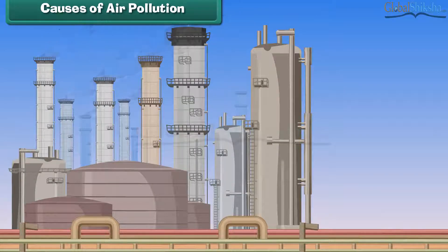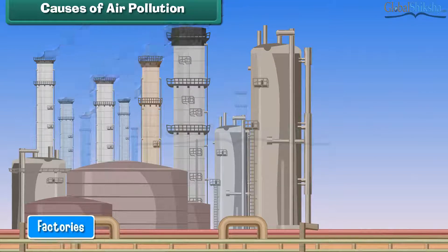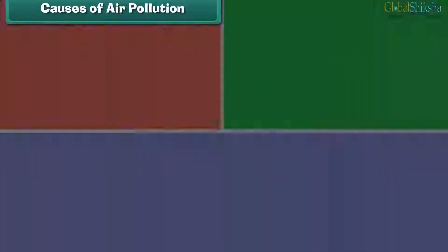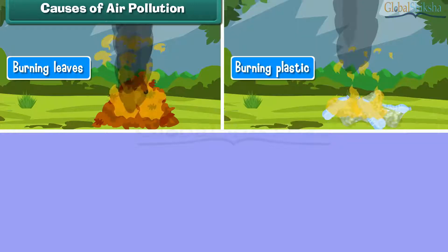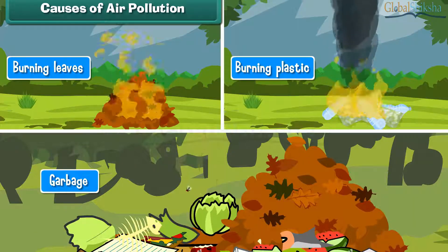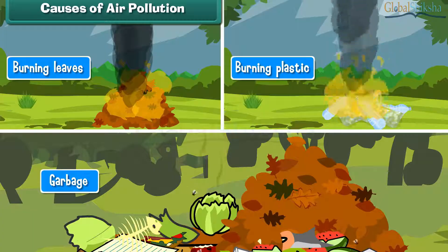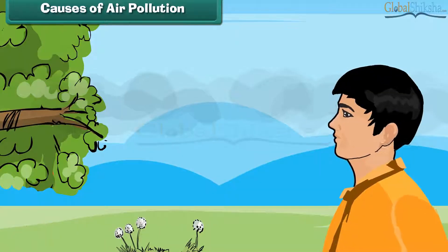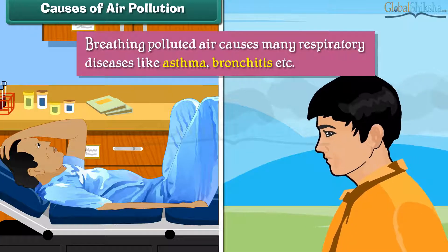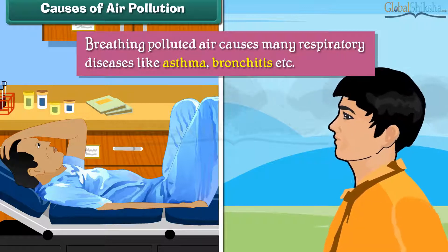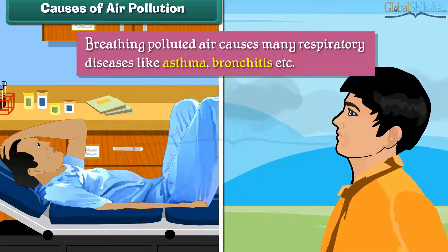Causes of air pollution: Air gets polluted by the smoke released by factories and vehicles. Burning leaves, plastic, and garbage also produces smoke and pollutes the air. Breathing polluted air causes many respiratory diseases like asthma and bronchitis.